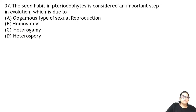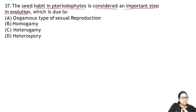Question 37: seed habit in pteridophytes is considered an important step in evolution. The seed habit came about because of heterospory. Selaginella and Salvinia have heterospory — it is heterospory that led to the seed habit.